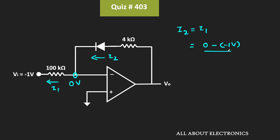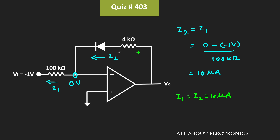Now let's find this current I1. This current I1 is equal to (0V − (−1V)) divided by 200kΩ, which is equal to 10μA. That means I1 is equal to 10μA, and the same current will also flow through the diode. That means I1 is equal to I2 is equal to 10μA. Once we know I2, we can easily find the voltage drop across the 4kΩ resistor.